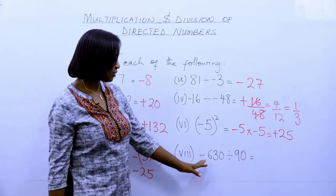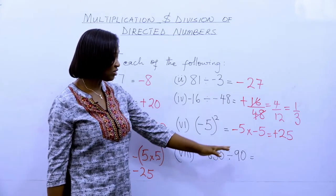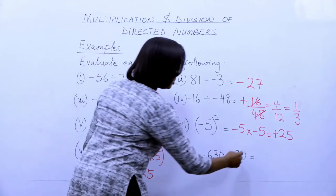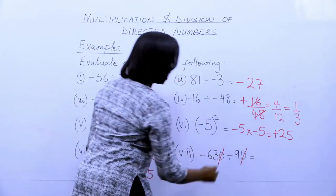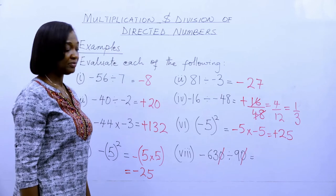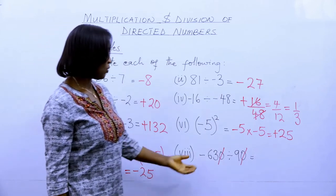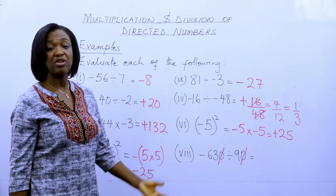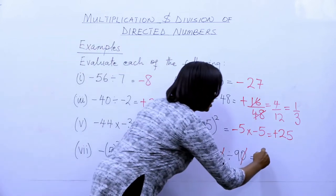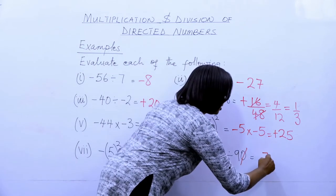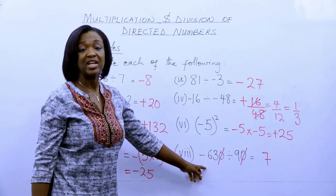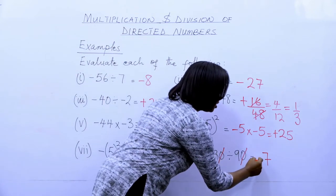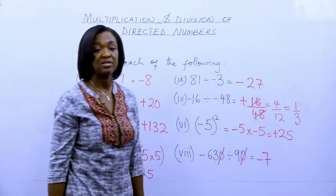For the last one, minus six hundred and thirty divided by ninety. Cancel out the zeros to get minus sixty-three divided by nine. Sixty-three divided by nine is seven, and since sixty-three is negative and nine is positive, our answer is minus seven.